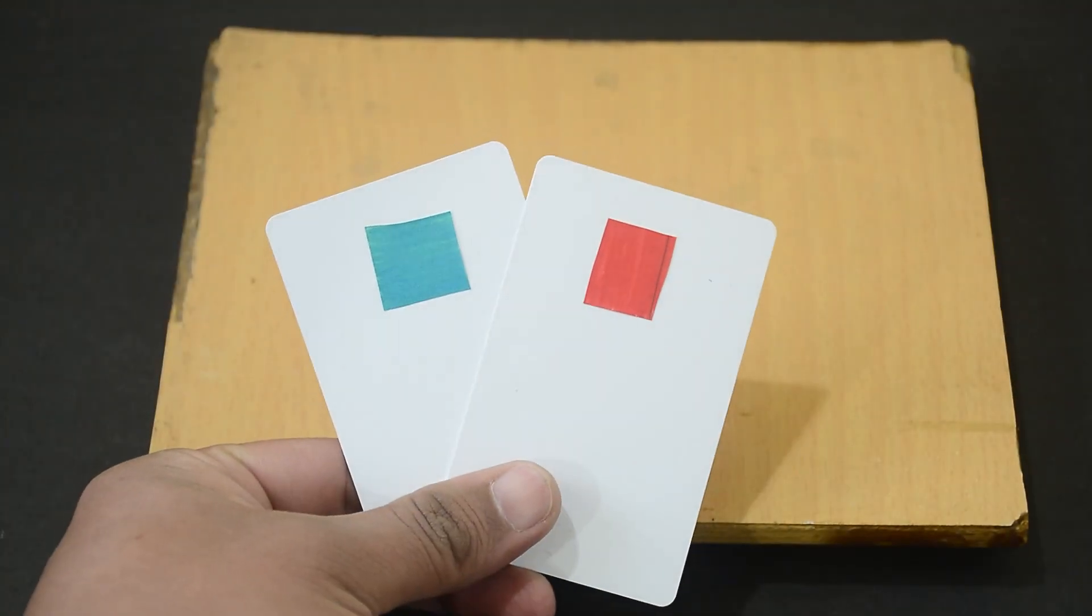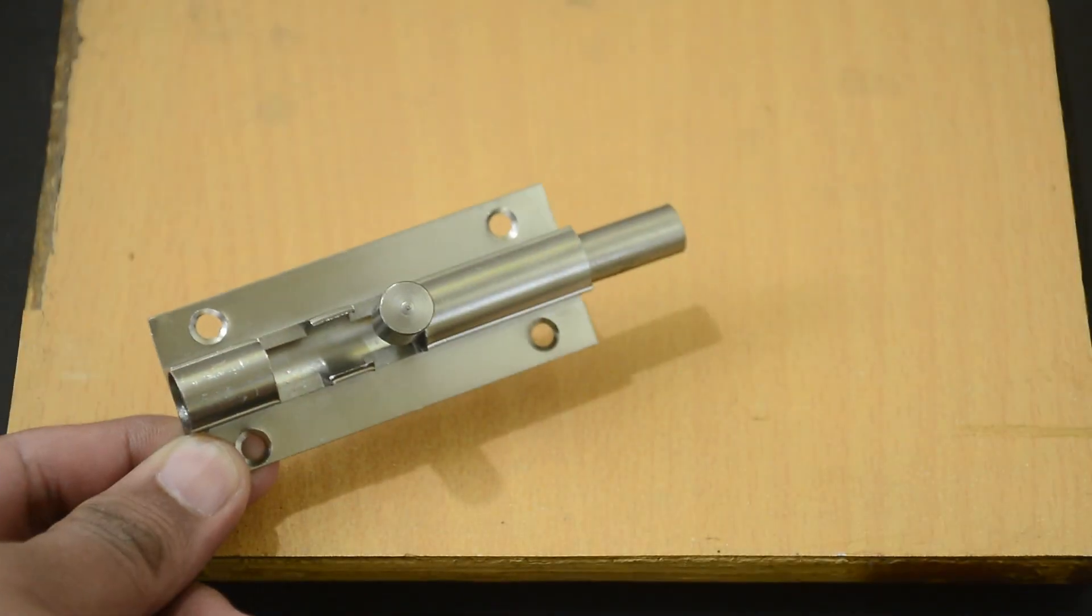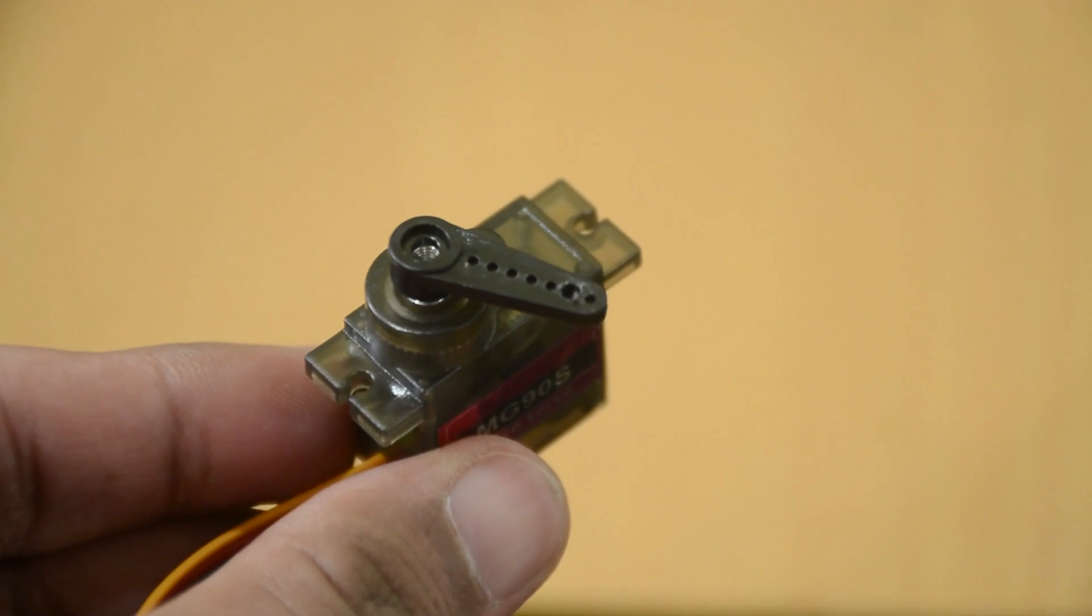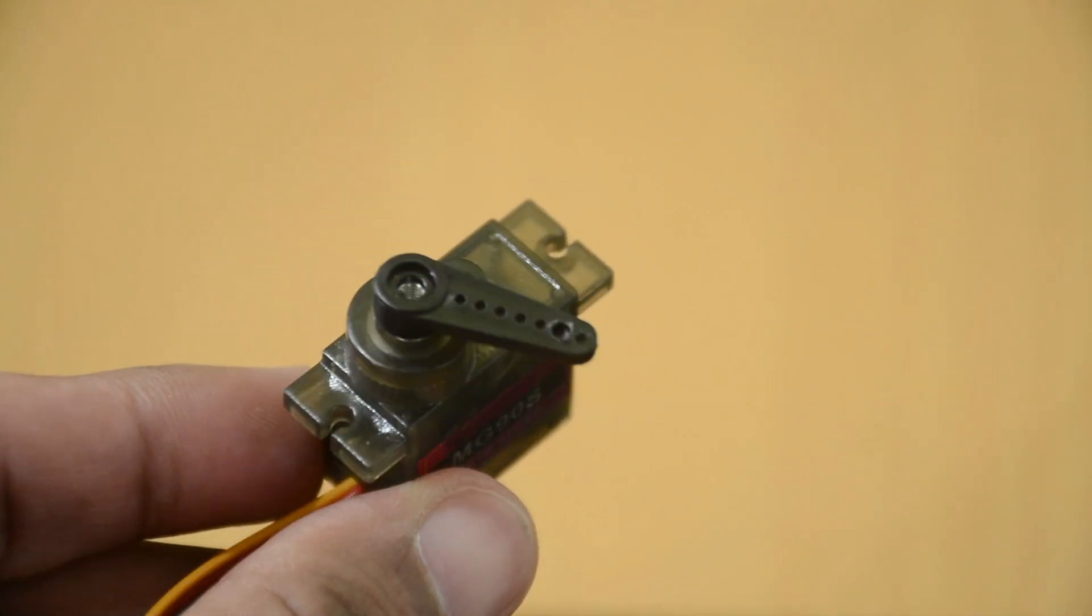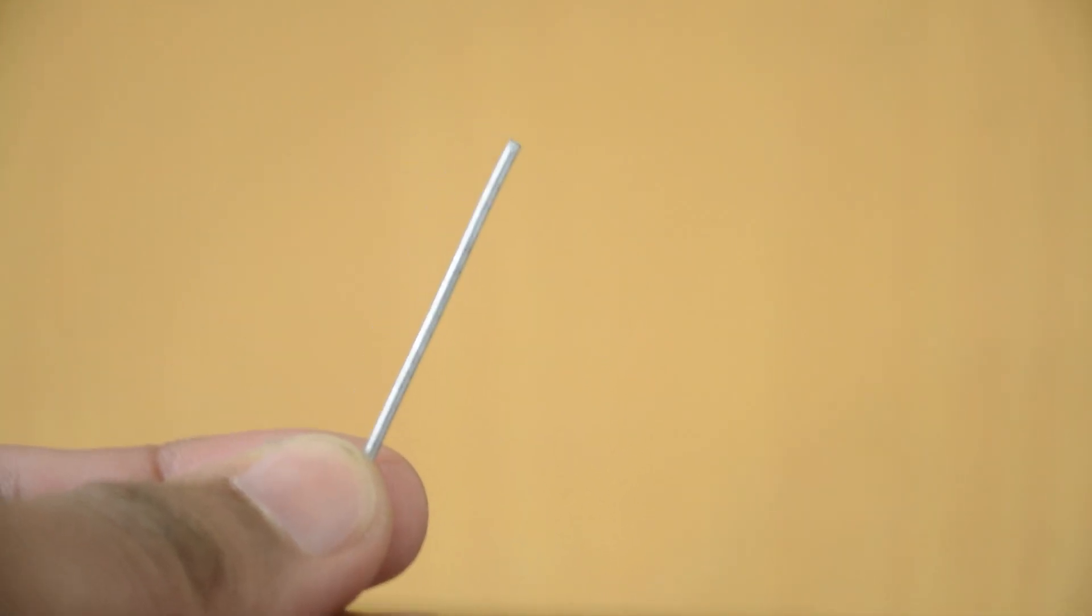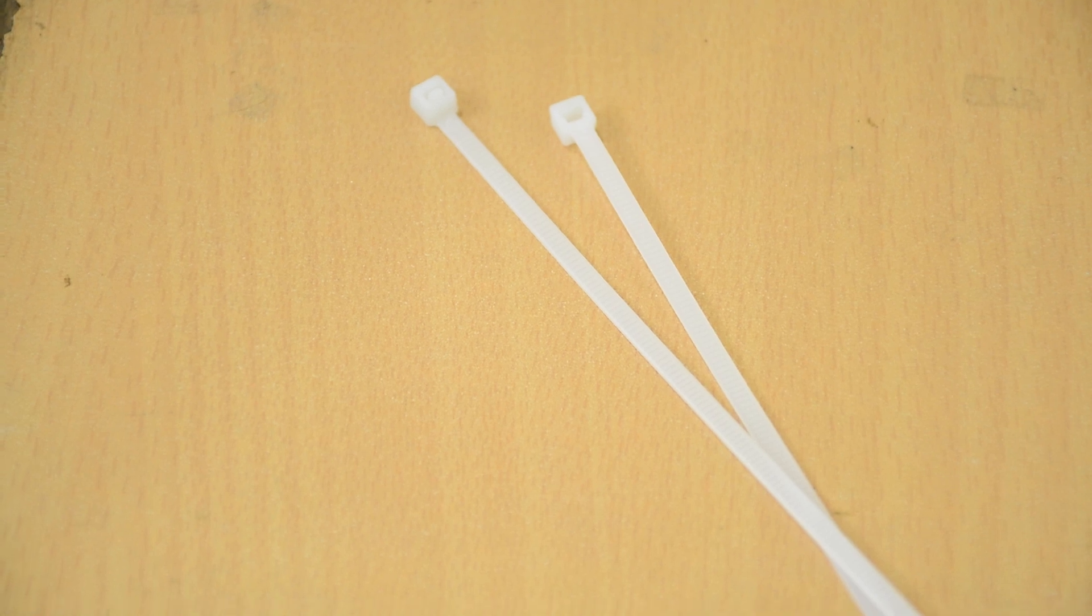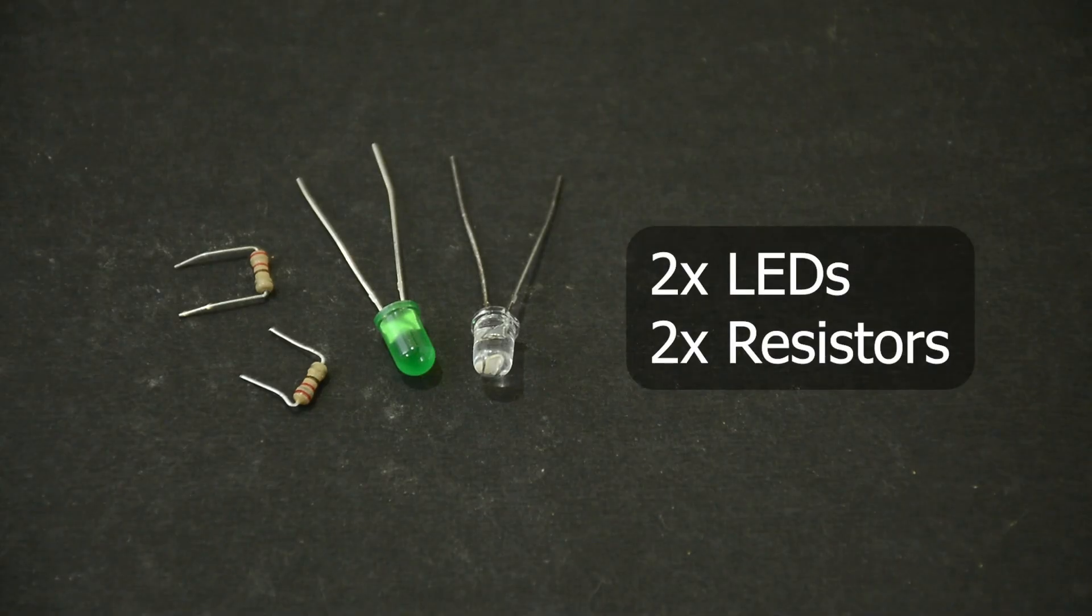Then we need some RFID cards, a door lock, a servo motor, a metal pin like this, a zip tie and some LEDs and resistors.